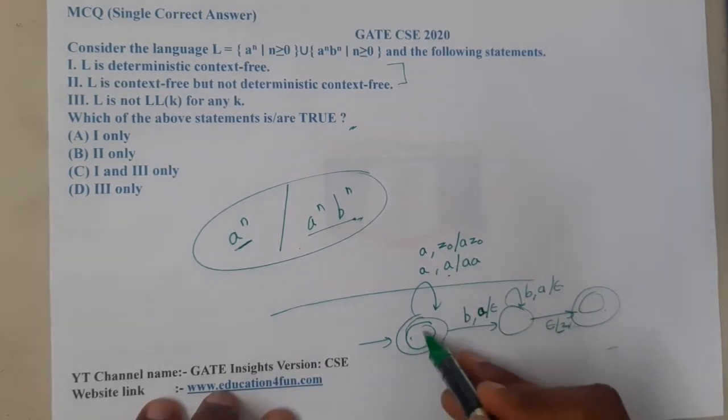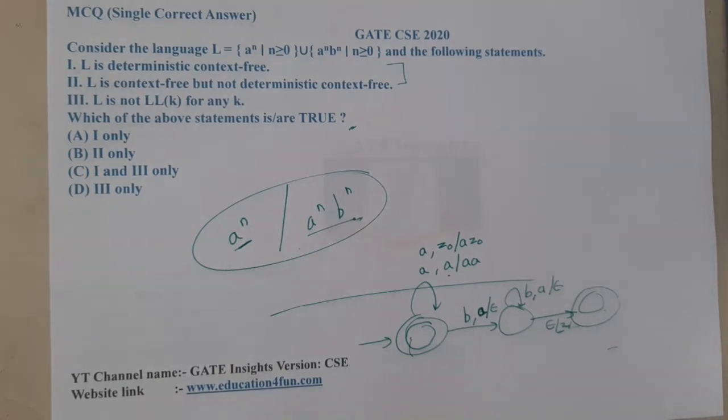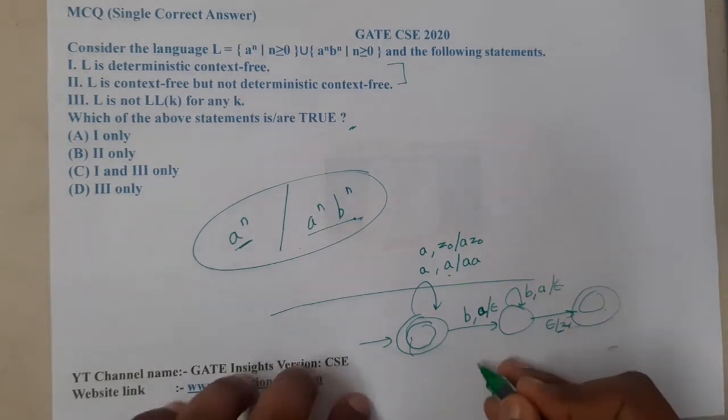Basically, even though our stack is having some a's, it is going to accept as we forced it to accept if it is final state. Now I think this is possible.